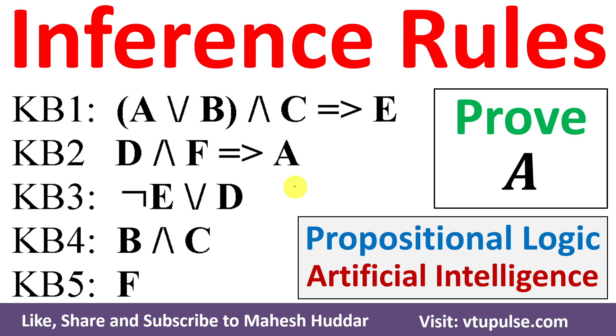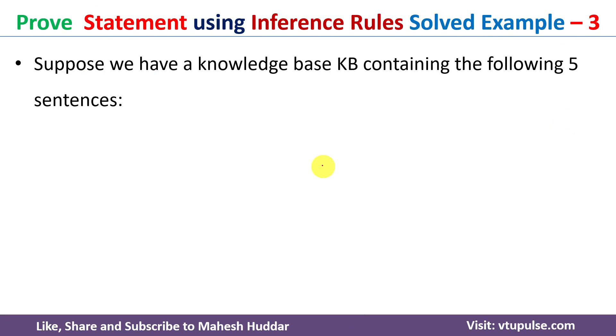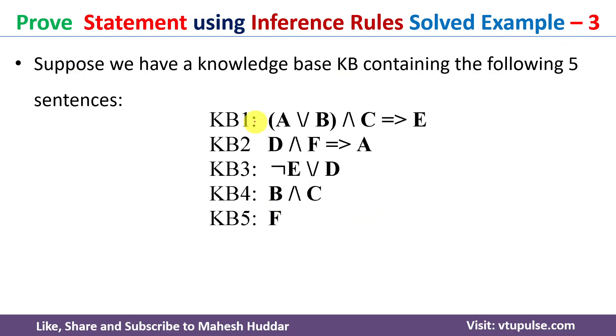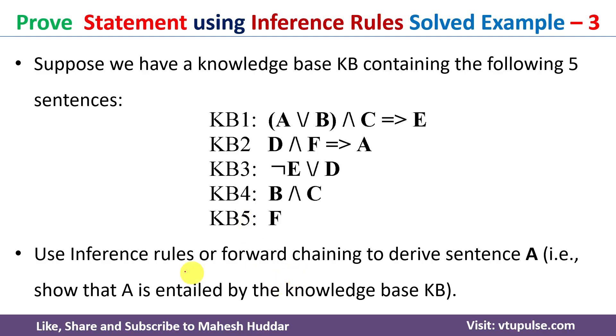Welcome back. In this video, I will discuss how to use inference rules to prove a conclusion given a set of knowledge bases in artificial intelligence with the help of a simple solved example. In this case, we have been given five knowledge bases. Given these knowledge bases, we need to use the inference rules or forward chaining to derive the sentence A.